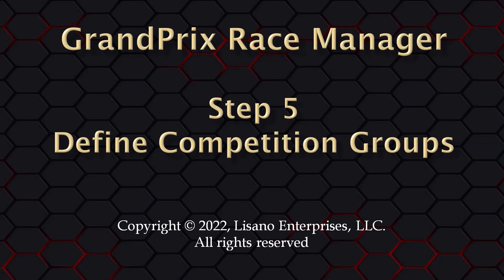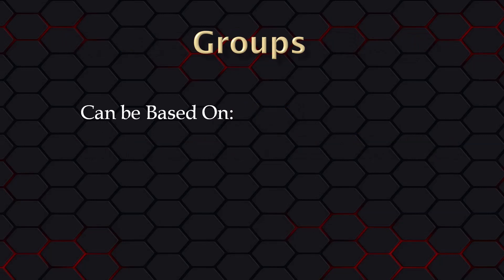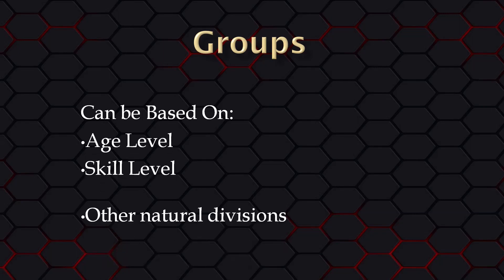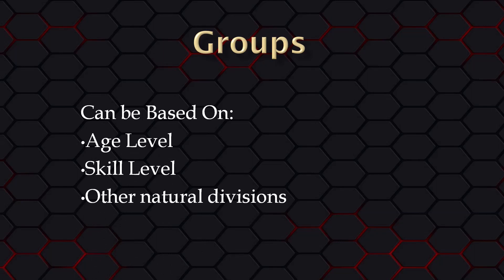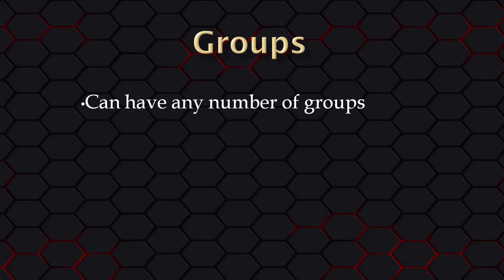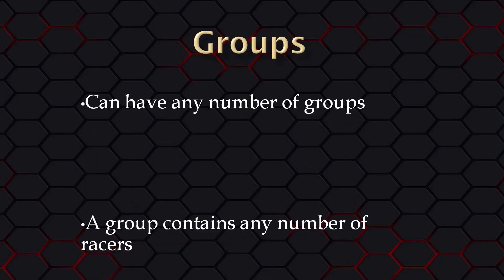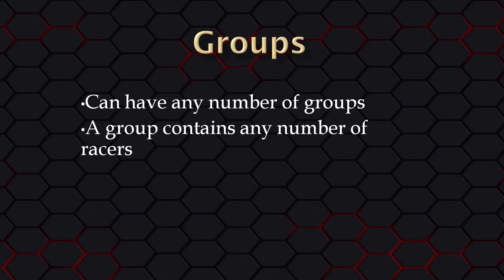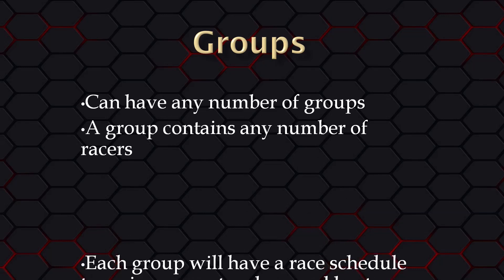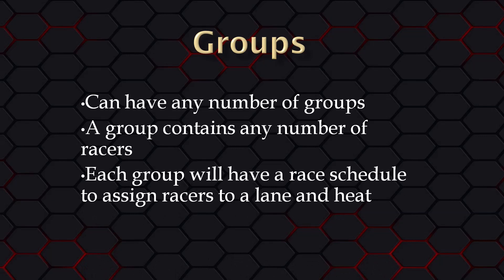When we talk about groups in the software, we mean your competition groups. You can have any number of groups. You can base your competition groups on age level, skill level, or whatever naturally works for your organization. You can have any number of racers in a group, though some scheduling methods do have limitations on the minimum and maximum racers they can accommodate. Each race group will end up with a race schedule, where members of that group will only compete against other members in that group.